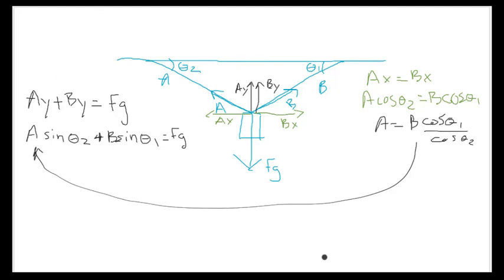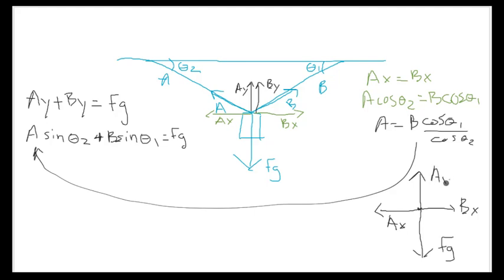The vector diagram on my dot would show the weight vector, the Bx vector, the Ax vector, and the combined Ay plus By vector. I'm trying to draw these so they balance each other out, showing the system is in equilibrium. That should give you at least a start on some of your homework problems. If you have questions, please email me.